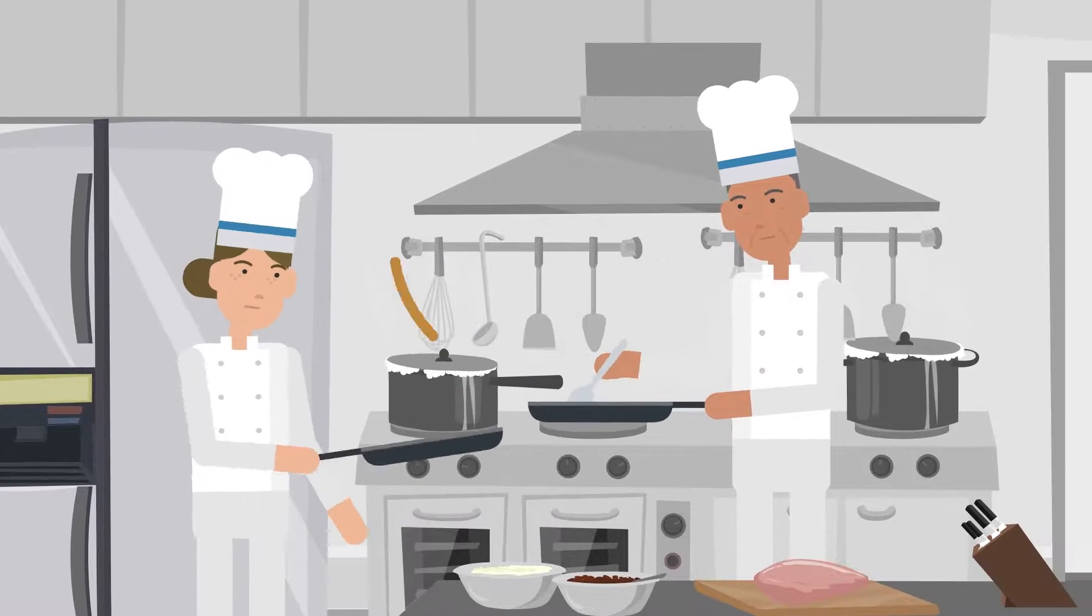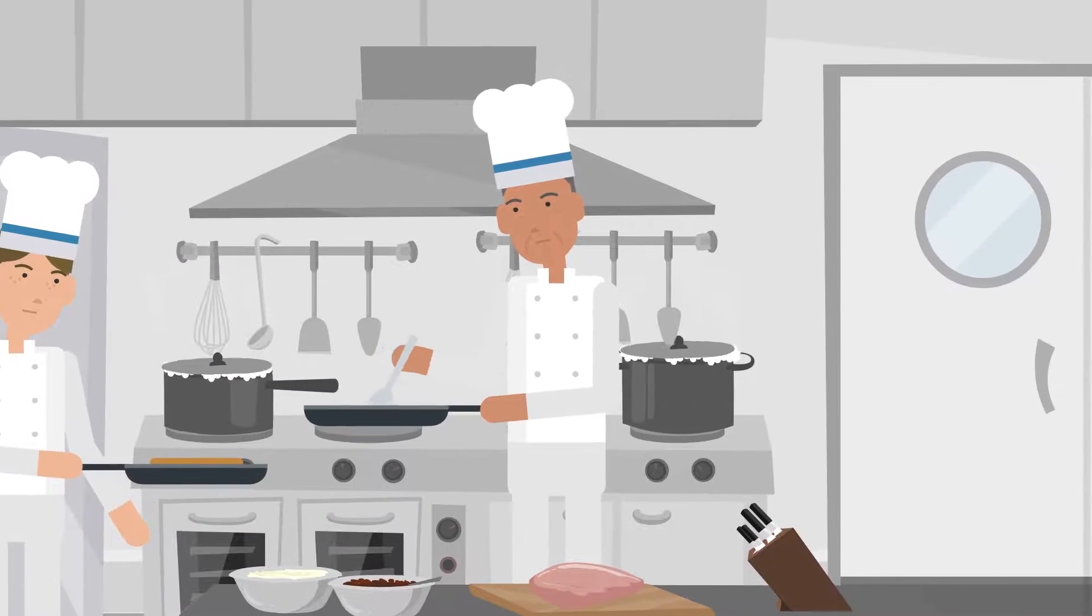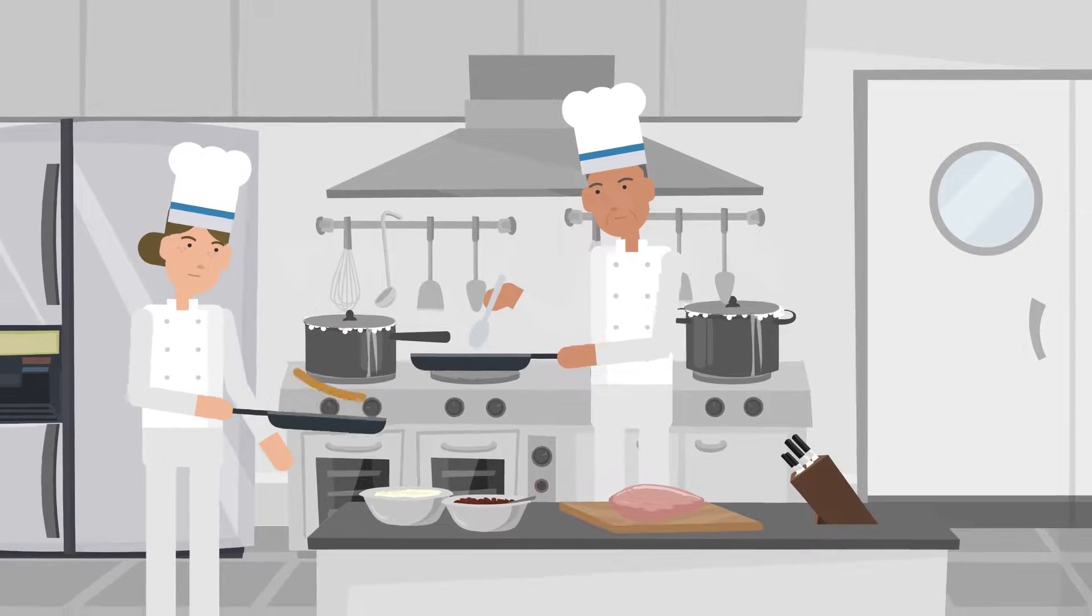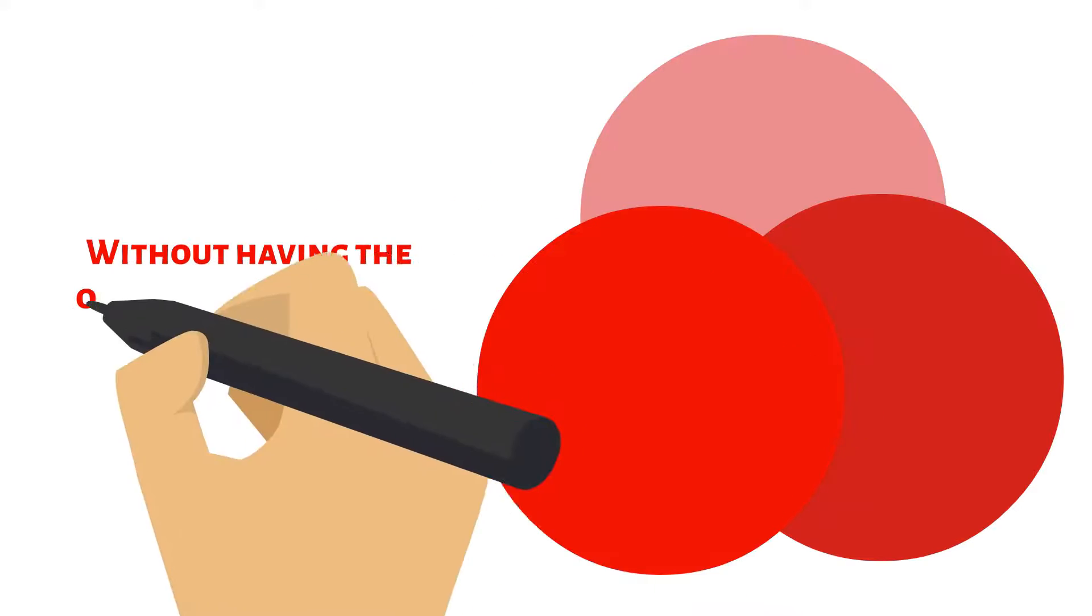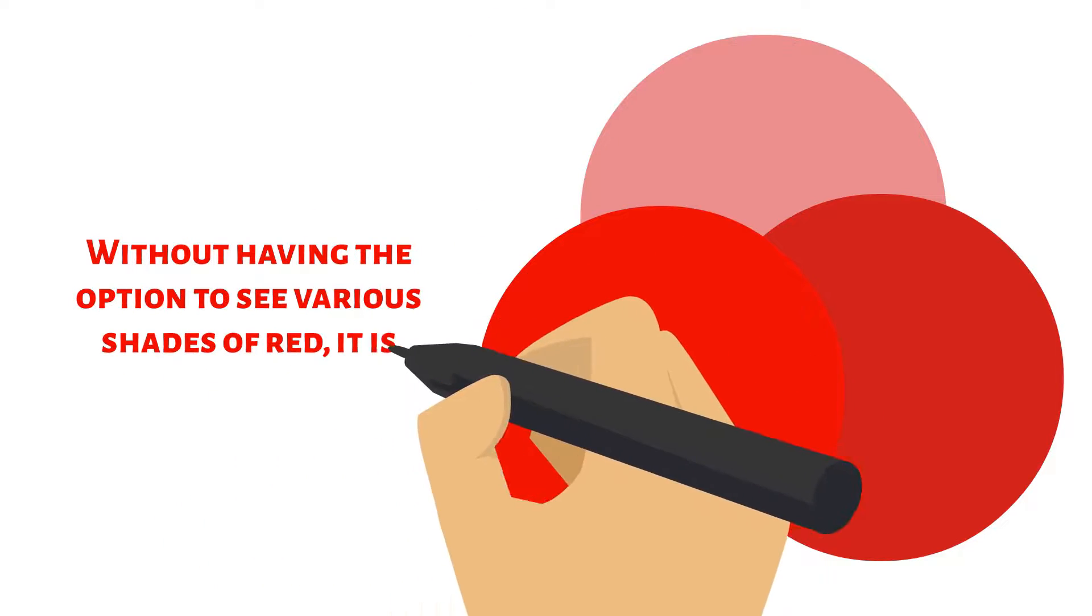Individuals who experience the effects of red-green colorblindness may have difficulty in deciding whether their meat is sufficiently cooked, struggle reading color-coded charts, and much more. Without having the option to see various shades of red, it is difficult to tell.